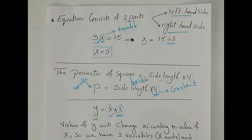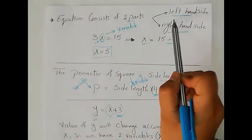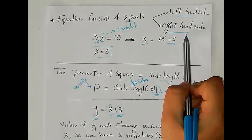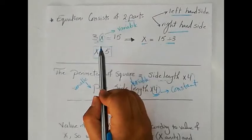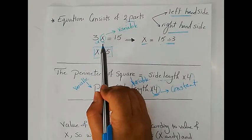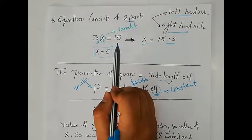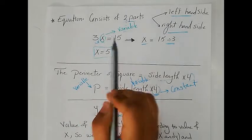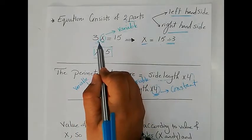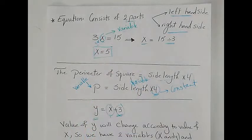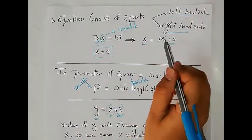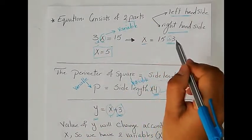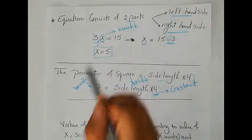As we said before, equations consist of two parts: a left-hand side and a right-hand side. For example, 3X equals 15. Here we have one variable, X, and two constants, 3 and 15. As you know, 3X means 3 is multiplied by X. To get the value of X, we move 3 to the other side with the inverse operation, which is division. So X equals 15 divided by 3, which gives X equals 5.